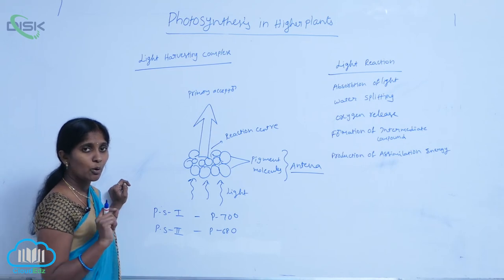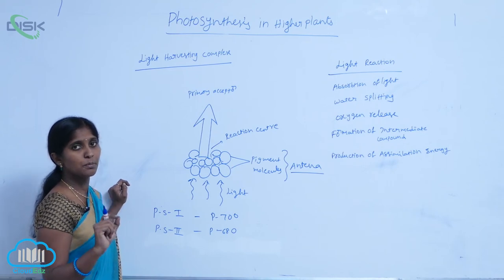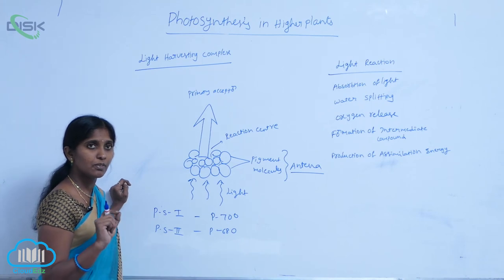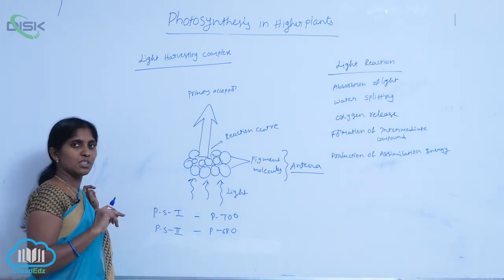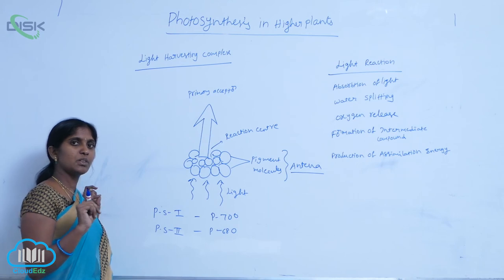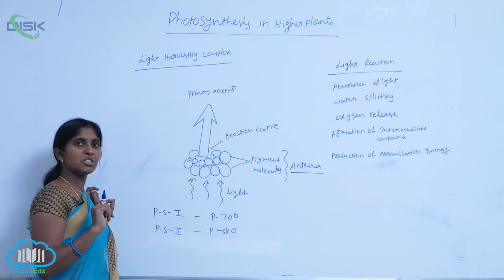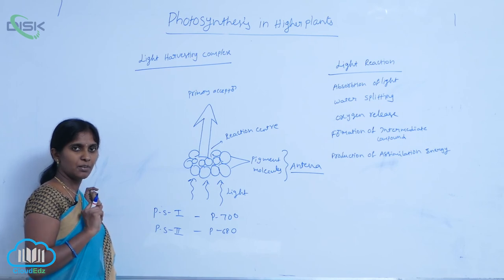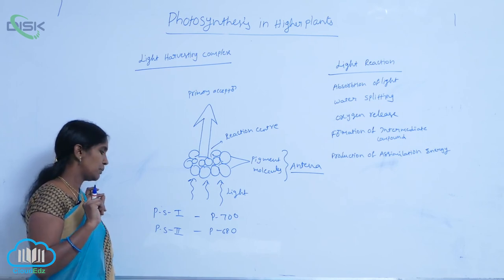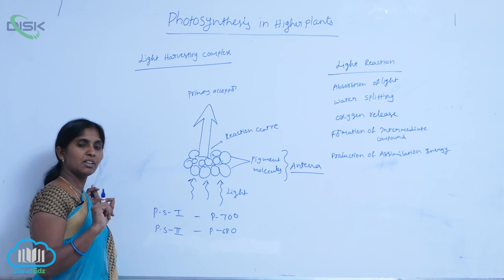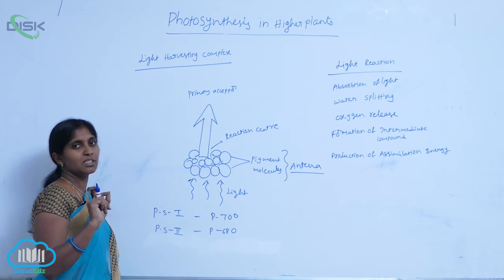How many photosystems are present in the light phase? Two photosystems are present: Photosystem 1 and Photosystem 2. Photosystem 1 has the reaction center P700 and Photosystem 2 has the reaction center P680.